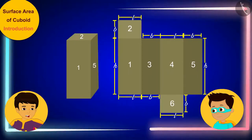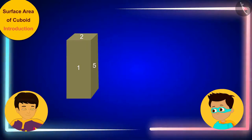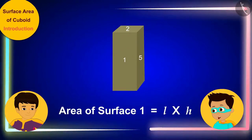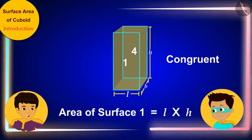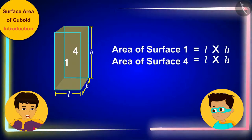Let's first find out how much paper we will need to cover surface 1. The size of paper required to cover any surface will be equal to its area. The surface is rectangular with length L and width H. This means that its area will be length times width, or L times H. And look, Thomas, as you know the surface 1 and the surface 4 of the cuboid are congruent. This means we will also need L times H of paper to cover the surface 4.